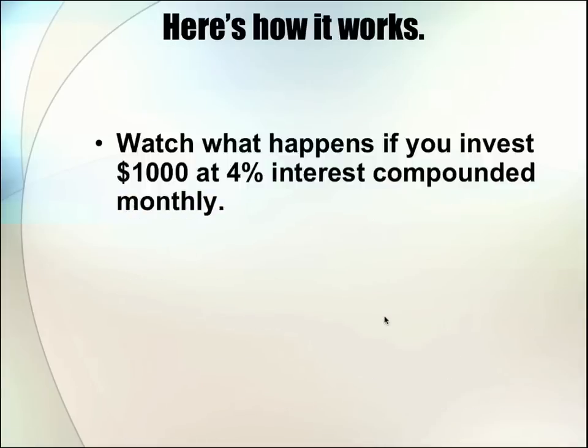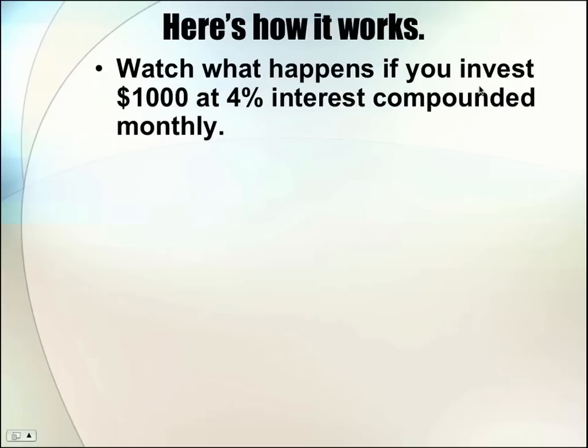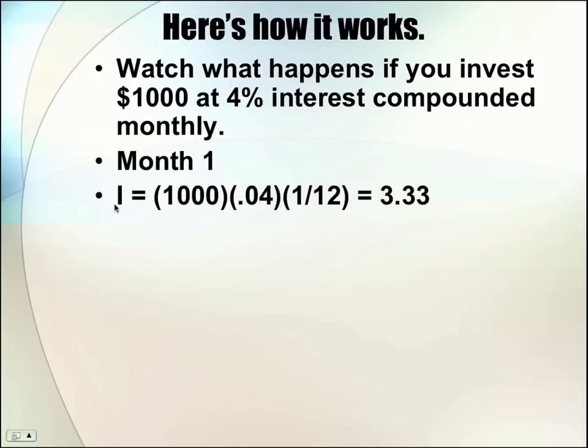Here's how it works. Watch what happens if you invest $1,000 at 4% interest compounded monthly. In month 1, we can use the simple interest formula, I equals PRT, to find out how much interest we would earn. So we would just do 1,000 times .04 times 1 over 12, because we're doing 1 month out of the 12 in a year. And so that gives us an interest amount of $3.33.